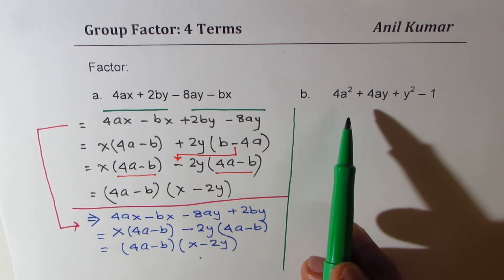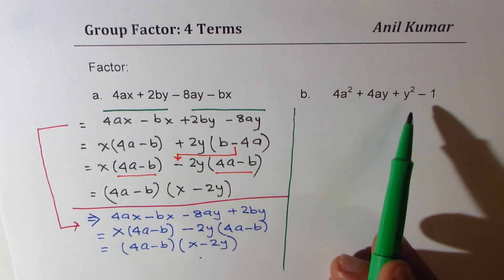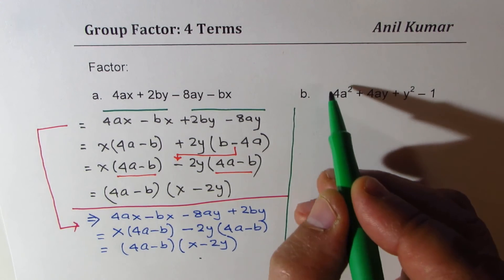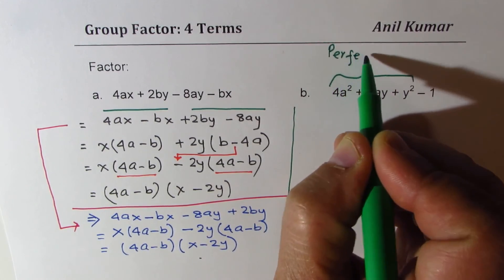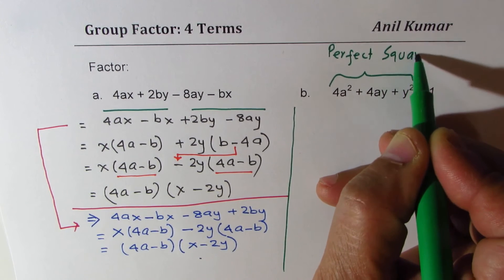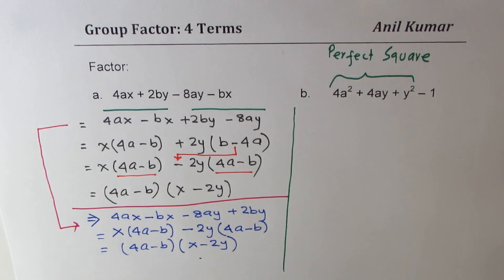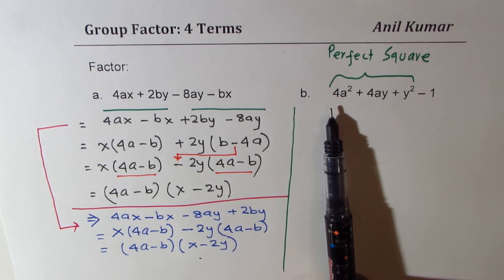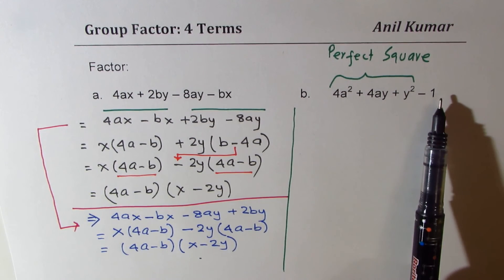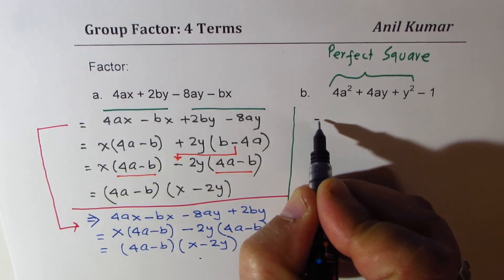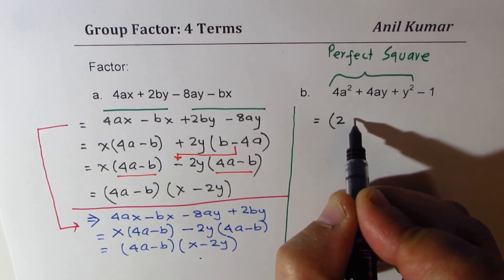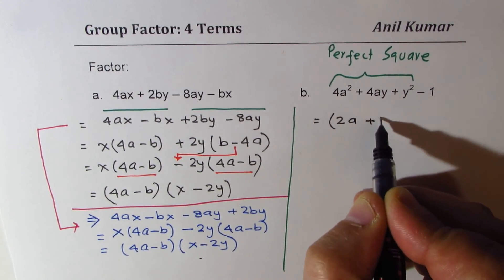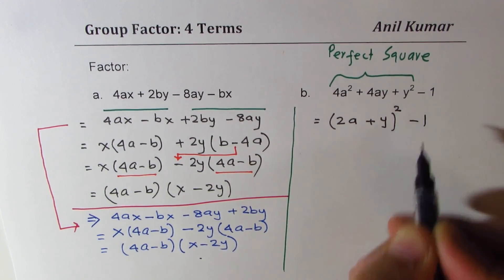Let's get to the second group factoring. Here again we have four terms. We note that there is a perfect square present. Since 1 is also a perfect square, it is a good idea to group them as 3 and 1. So the first three terms can be written as 2a plus y, whole squared, and we have minus 1.